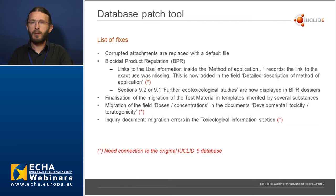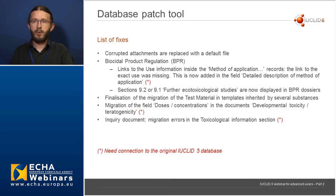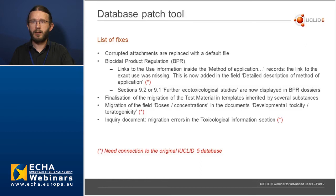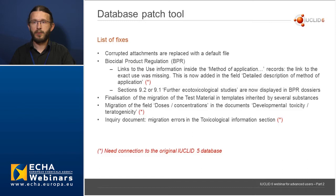In this release of the database patch tool, we provide a fix for corrupted attachments that existed in IUCLID 5 and were not fixed before migration to IUCLID 6. We have also identified specific migration issues with BPR data and biocides-related data, and migration issues for the developmental toxicity teratogenicity document for the dose and concentrations fields. The tool also provides fixes for incorrect migrations of inquiry documents in some cases.